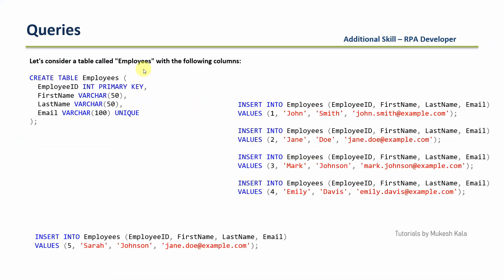Coming back to the presentation — these are all the queries which I had executed. This is the table: 'CREATE TABLE employees'. To create a unique key, you simply use the 'unique' keyword. You can have multiple unique keywords in the table. We inserted records 1, 2, 3, 4. But when I tried to insert the record with 'jane.doe' which was already available in the table, I was getting an error. So in case you have a unique key constraint, you cannot have two employees with the same email ID in the table. That is how the unique key constraint works.